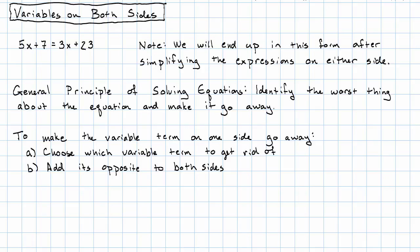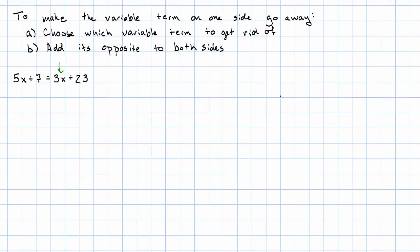So in my equation, 5x plus 7 equals 3x plus 23, I'm going to choose to get rid of the 3x on the right. That was a choice I made. You should try for yourself and see that if you make the choice to get rid of the 5x on the left instead, you still get the same answer. So to get rid of the 3x, I want to add negative 3x on the right and also negative 3x on the left. I wrote them underneath the x terms because those are the like terms that I'll now combine. 3x plus negative 3x is 0, so that cancels out.